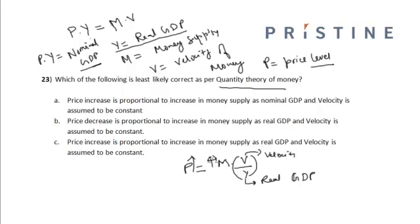So if we look at all the options, option C says that the price increase is proportional to the increase in money supply as the real GDP and the velocity is assumed to be constant. So the correct option is option C.